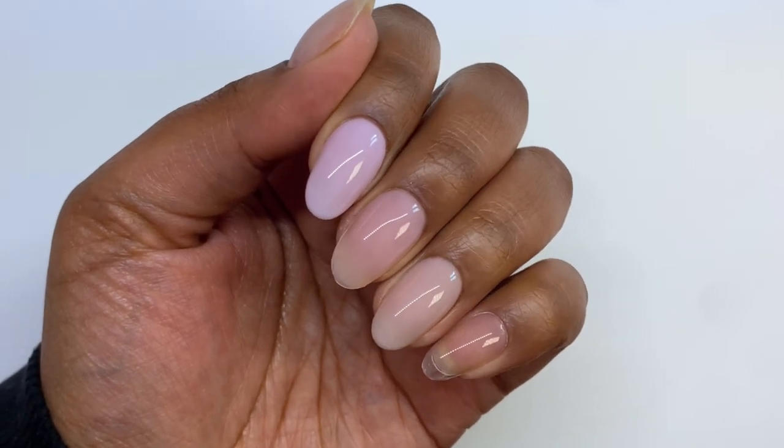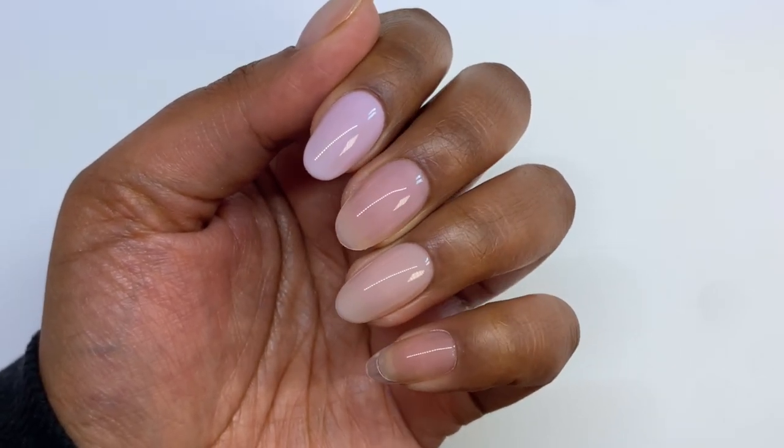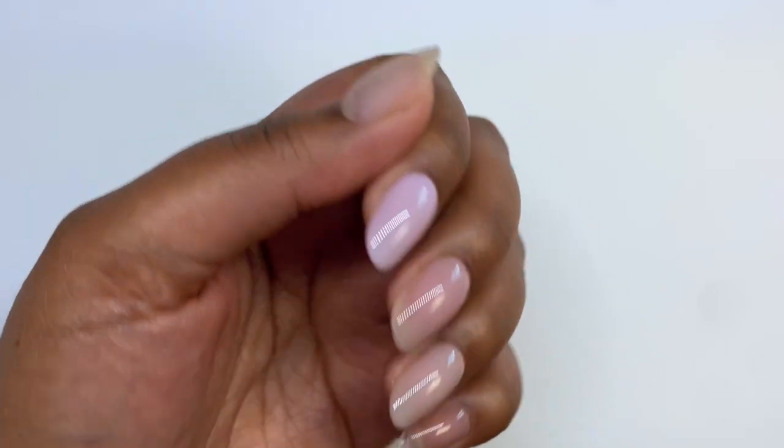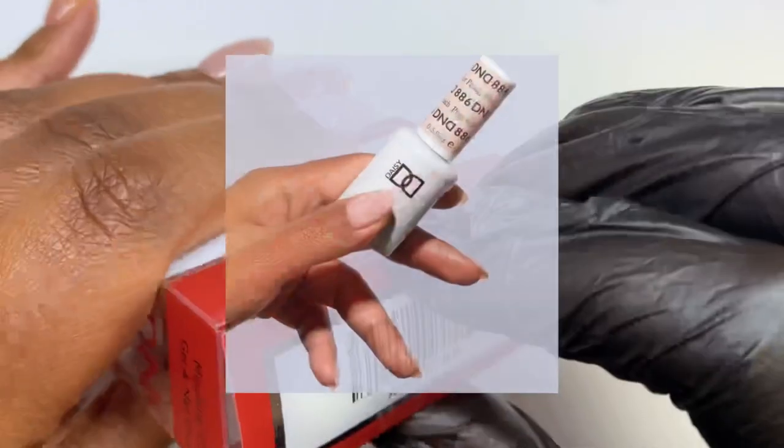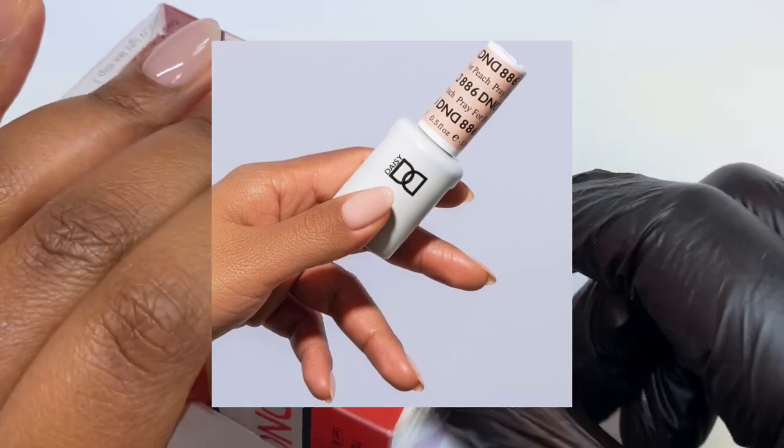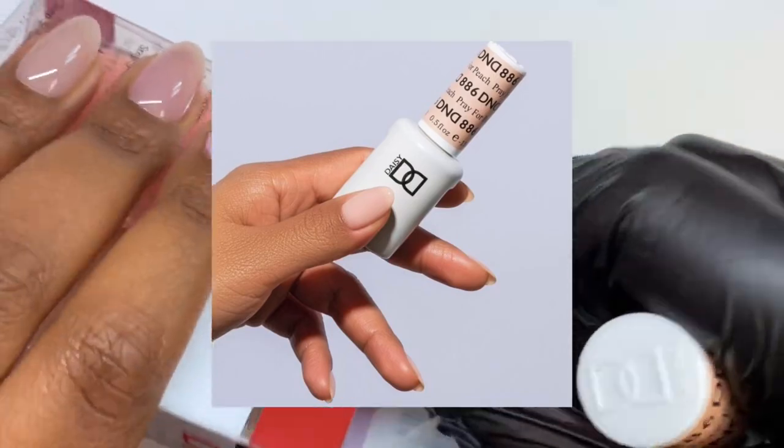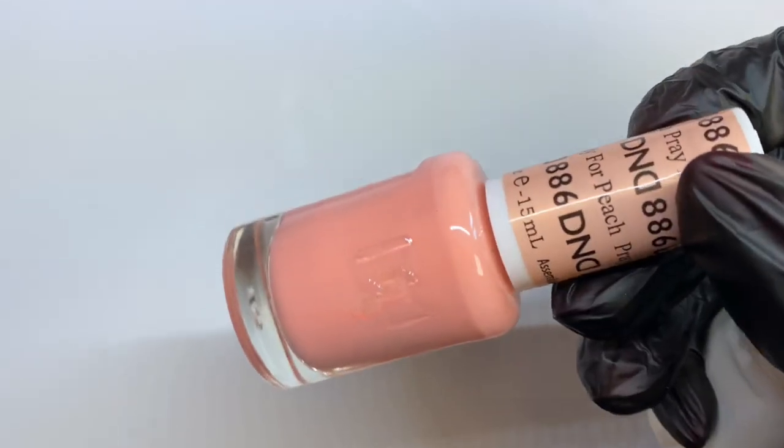But look at how beautifully that self-levels and just how stunning that color is. It's a really nice bridal shade, I'd say, actually. But yeah, here are the first four shades that I just swatched for you. And I'm going to show you the fifth shade that I chose, which is called Pray for Peach. Now, it was really hard to choose which shades I wanted from this collection. I saw this one, and as you can see, the swatch is gorgeous.